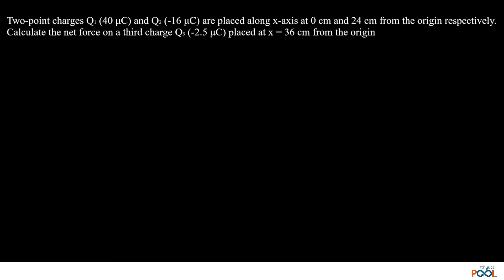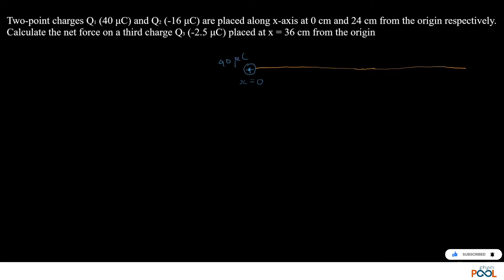This question is based on superposition of charges. We have three charges given, all kept on the x-axis. At x = 0, the charge is 40 micro coulomb. The second charge, minus 16 micro coulomb, is kept at 24 cm from the origin. This is a negative charge and the distance is 24 cm from the origin.